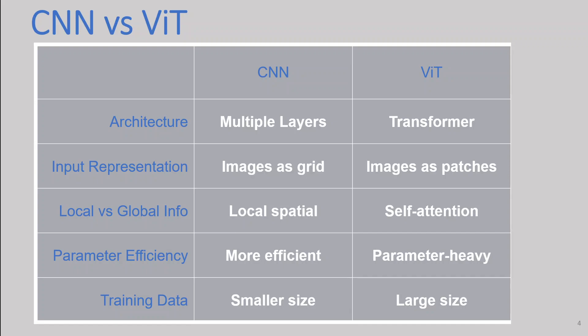The second point is input representation. CNNs directly process images as input, typically as grids of pixels organized in multiple channels — for example, RGB images with three channels. ViTs require input images to be flattened and represented as sequences of patches. Each patch is then embedded and treated as a token.